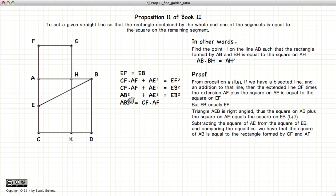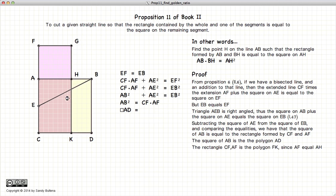So we have AB squared is equal to CF times AF. Now the square of AB is equal to the rectangle AD. CF times AF is this rectangle here. CF times AF is FK. So we have this square is equal to this rectangle.